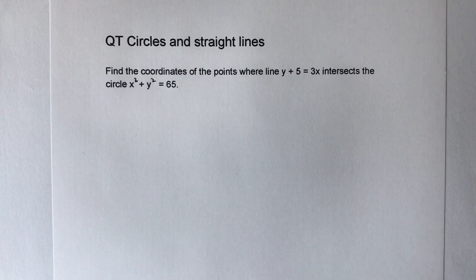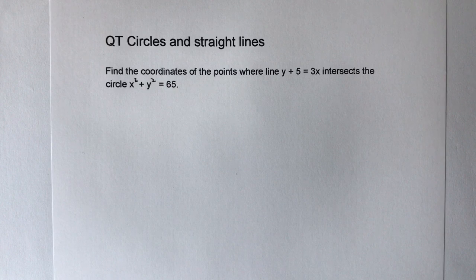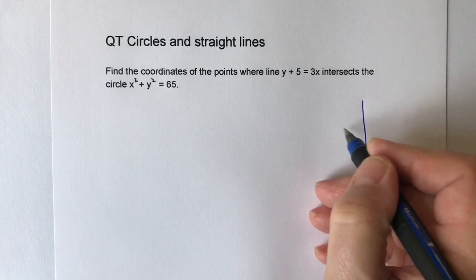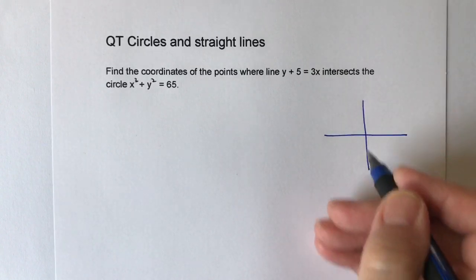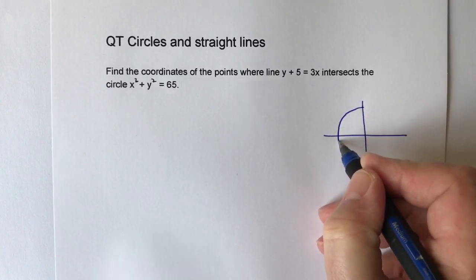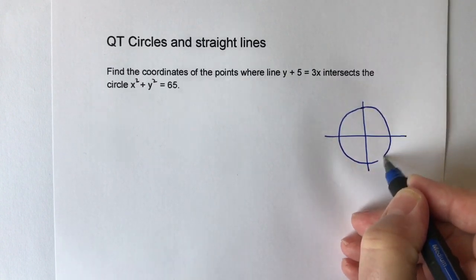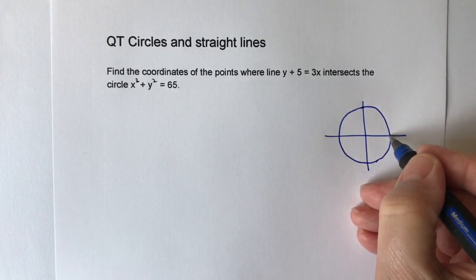What we're going to do is plot where the coordinates cross or where the circumference of the circle crosses with the straight line. Because effectively we've got something like this. So if this is the circle itself, it's going to sit around about a radius of roughly 8.